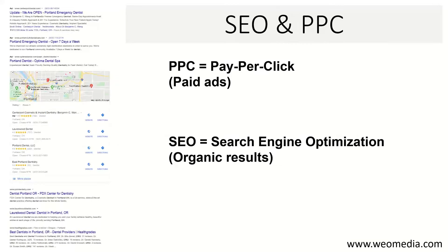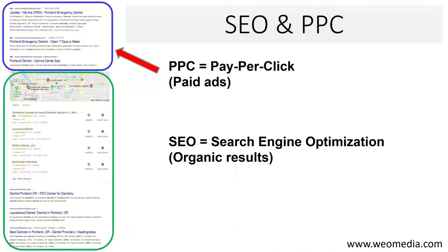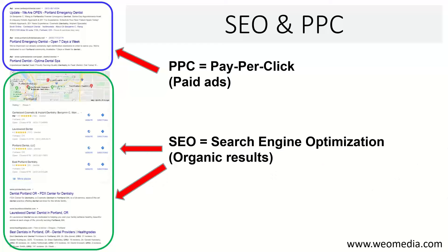Let's set the context for what SEO and PPC mean on a search result. On a Google search for a dentist in Portland, Oregon, at the very top outlined in blue are the PPC ads — paid ads where people pay money to show up in those spots. Below that, outlined in green, are the organic results determined by SEO performance, including a local map section with typically three or four listings, and then about ten organic listings below that.